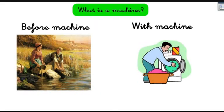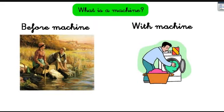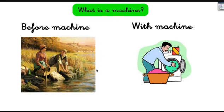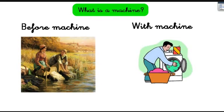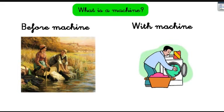Before machines, people had to go to the river to wash clothes with their bare hands. It was painful on your hands, your back, your knees — such hard work. Before machines, washing clothes was a nightmare. But now, with the washing machine, it's so easy. You put the clothes inside, add soap, and then with energy — electricity — the machine washes the clothes. Excellent.